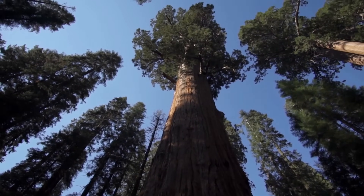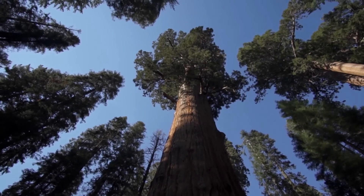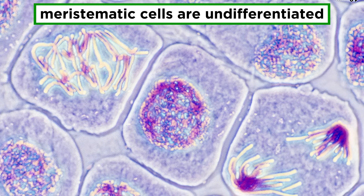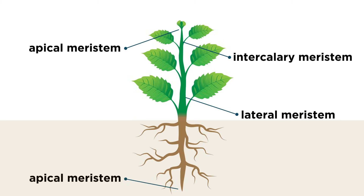How can they grow to be so tall? Plants grow and develop in several ways, but they all start with the meristem cells that we talked about earlier in the series. As a refresher, meristematic cells are undifferentiated, meaning that they don't have a specific job assigned to them when they first form. That means that when meristem cells divide, they can produce daughter cells of any kind that can go on to do whichever jobs the plant needs them to do.